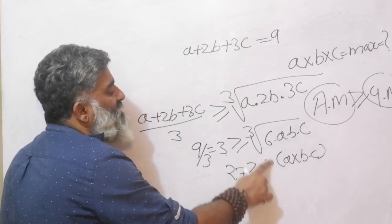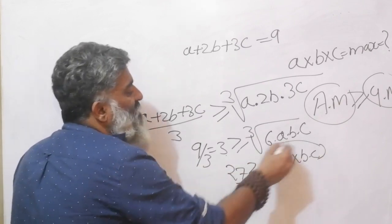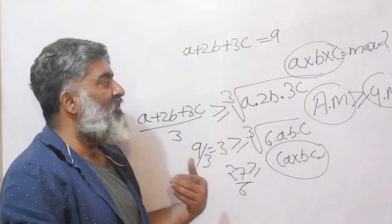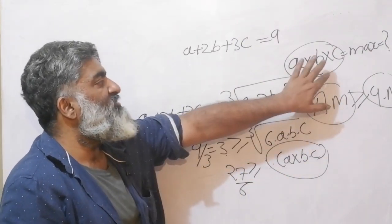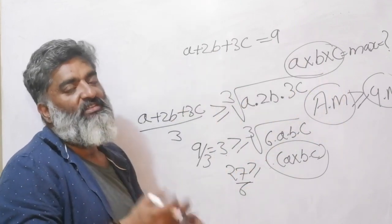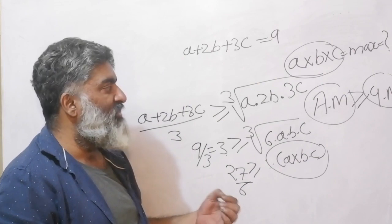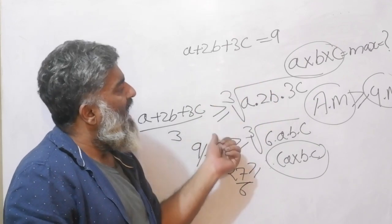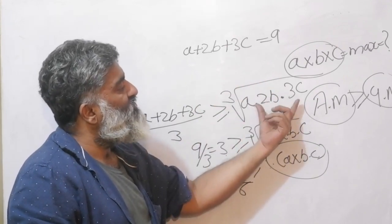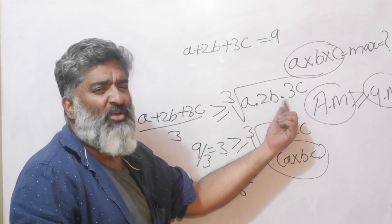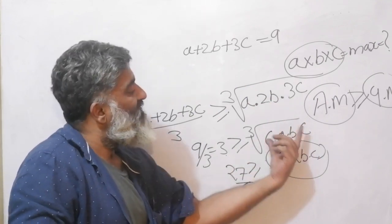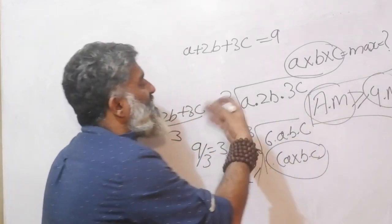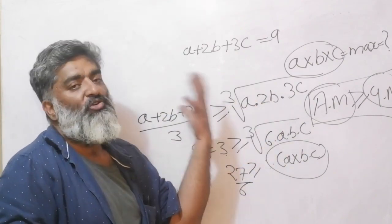Moving the 6 to the other side: a·b·c ≤ 27/6. Comparing to the previous example, the sum looked different and so the product changes accordingly — but it is convenient because there is just an extra coefficient to adjust. The central idea remains AM ≥ GM, and the secondary skill is just manipulating the equations.